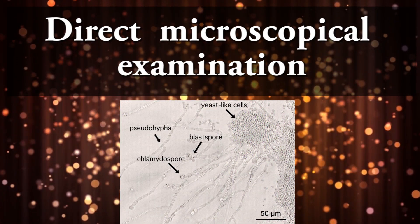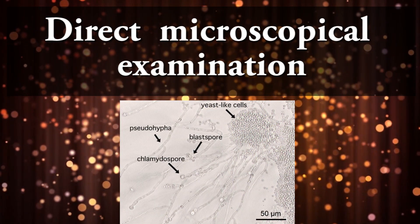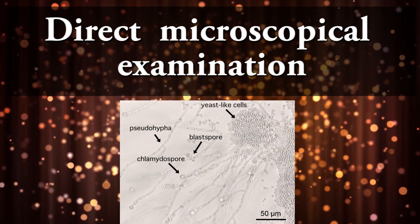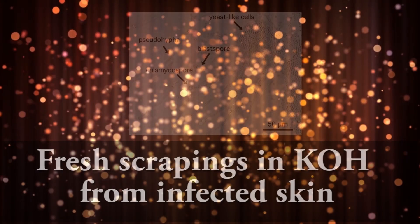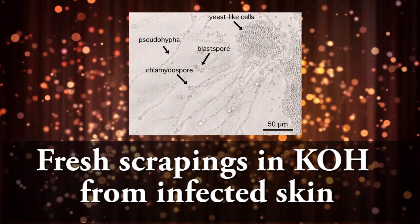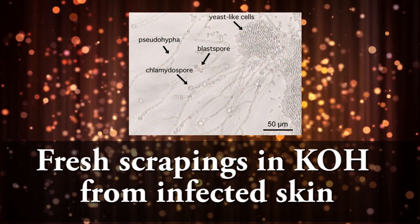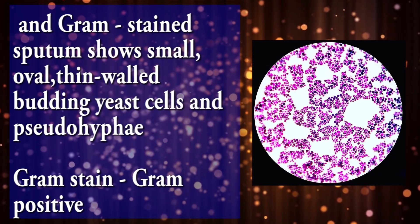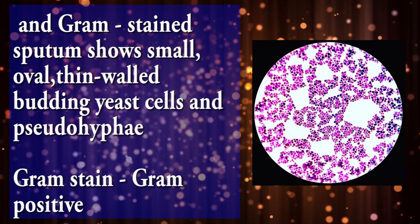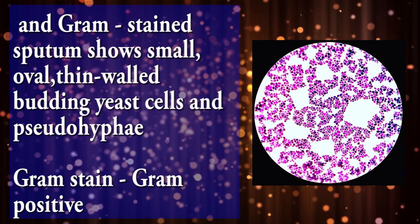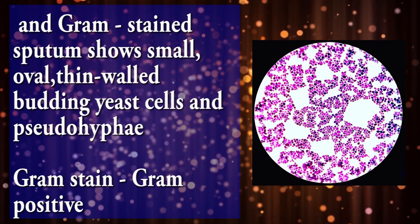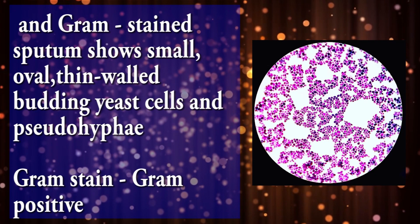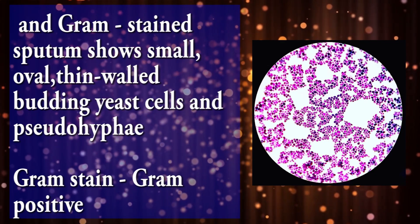When the specimens are received in the laboratory, firstly we do direct microscopy examination. Skin scrapings in 10% KOH, and gram-stained sputum, show small, oval, thin-walled budding yeast cells and pseudohyphae. Gram staining results are gram-positive.